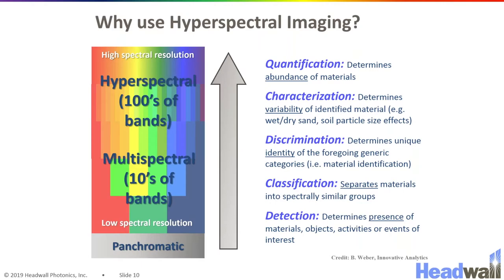With a hyperspectral imager, you can do anything with an image that a trained spectroscopist can do with a spectrum, including discriminating objects based on their chemical signatures or even quantitative measurements based on the strength of spectral absorptions in the hyperspectral image.